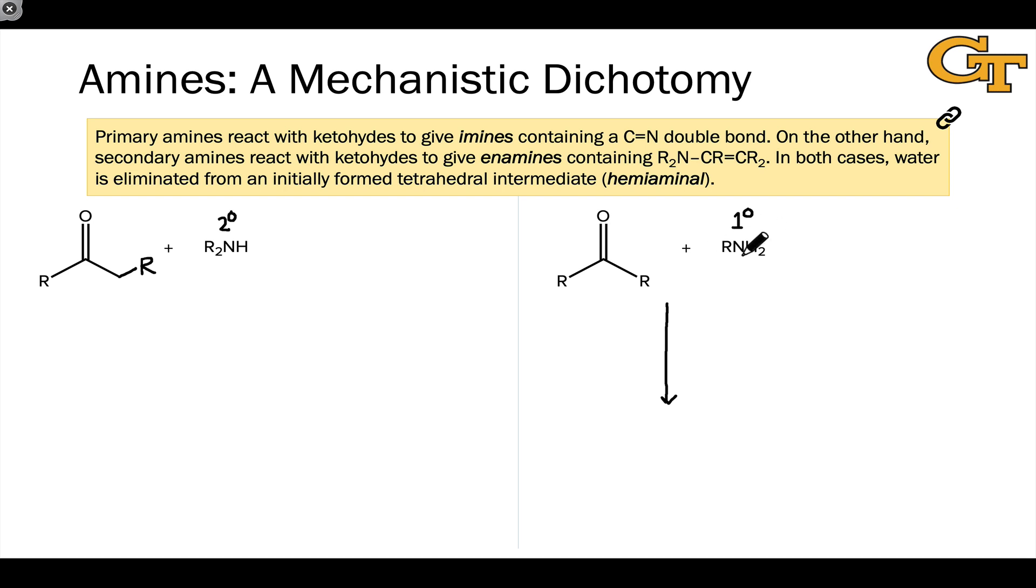When we combine a primary amine with a carbonyl compound, usually we do this in the presence of catalytic acid. This speeds up the reaction by facilitating nucleophilic addition. The product we ultimately end up with doesn't look like an addition product. In fact, it looks like almost magically, if you've never seen this before, the amine nitrogen has substituted for the carbonyl oxygen.